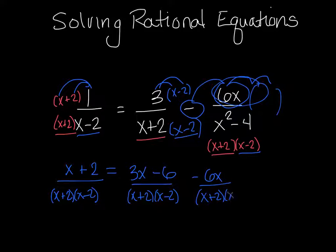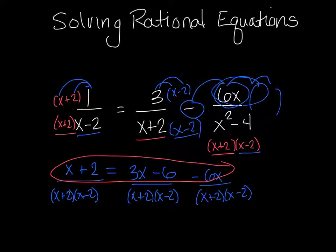Now here's the cool thing about rational equations. You see, I have an equal sign here, which means I want this side to be equal to this side. And here's what's cool. The bottom is already equal. I already have the exact same thing on the bottom. So now I can focus all my attention on the top. And so now I rewrite just the top. So I have x plus 2 equals 3x minus 6 minus 6x.